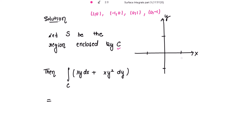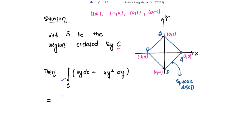Let's plot the square. (1,0) is this point, (-1,0) is this point, (0,1) is this point, and (0,-1) is this point. Let me name these A, B, C, and D respectively. Joining A to B, B to C, C to D, and D to A, we get the square ABCD.